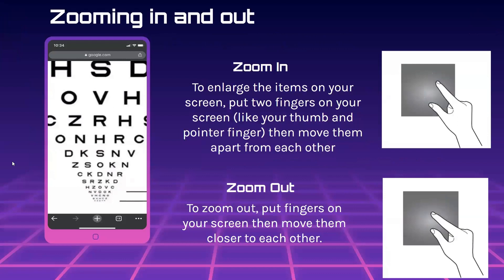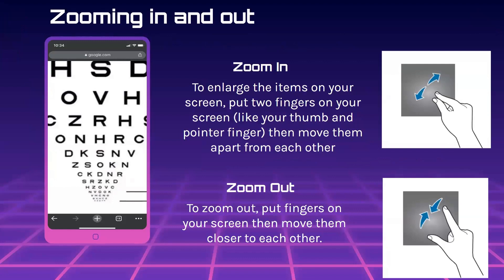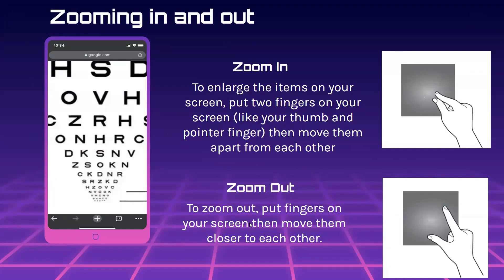Zooming in and out. To zoom in and enlarge the items on your screen, put two fingers on your screen — like your thumb and pointer finger — then move them apart from each other. To zoom out, place the same fingers on your screen and then move them close to each other.